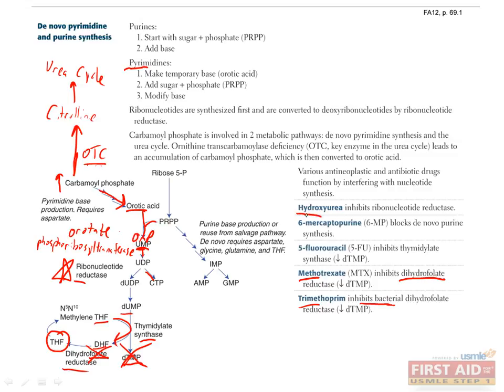Some other antineoplastic therapies that relate to nucleotide synthesis are hydroxyurea, which inhibits ribonucleotide reductase, 6-mercaptopurine, which inhibits purine synthesis, and 5-fluorouracil, which inhibits thymidylate synthase.